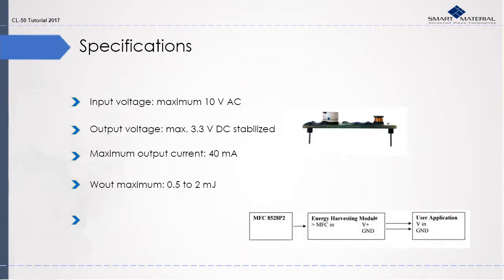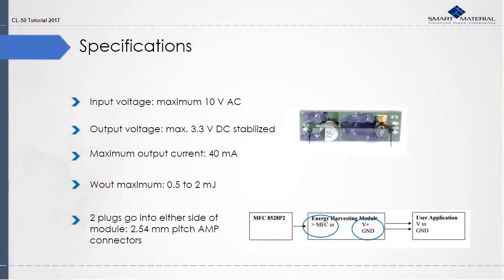Take a look at the graphic representing the connections between the CL-50, here called the energy harvesting module, and the MFC-8528P2 and the user. Two plugs go on either side of the CL-50 module. These will be 2.54 mm pitch AMP connectors.